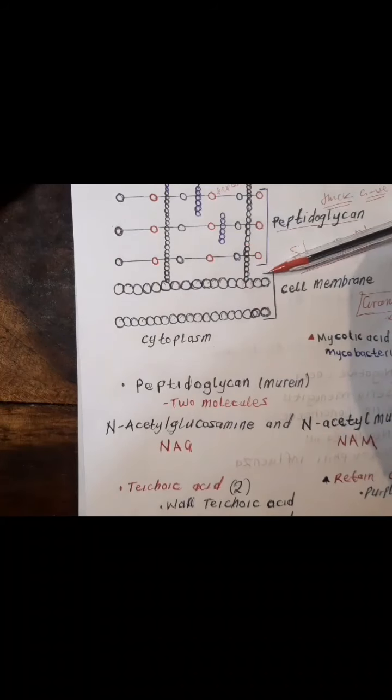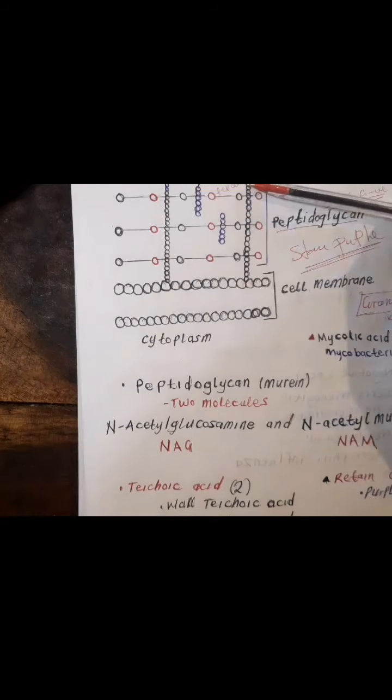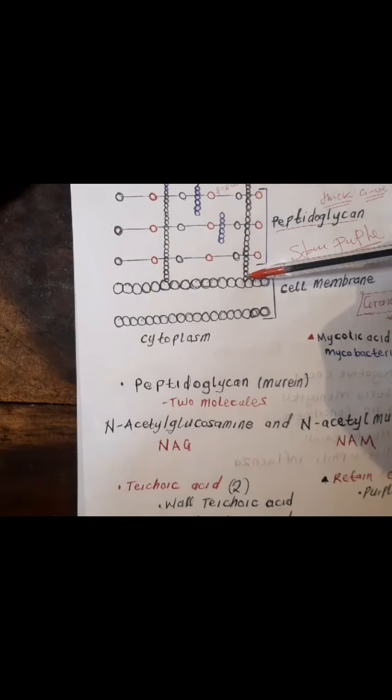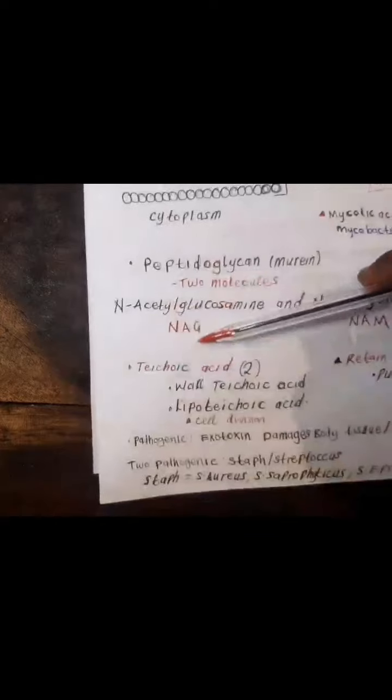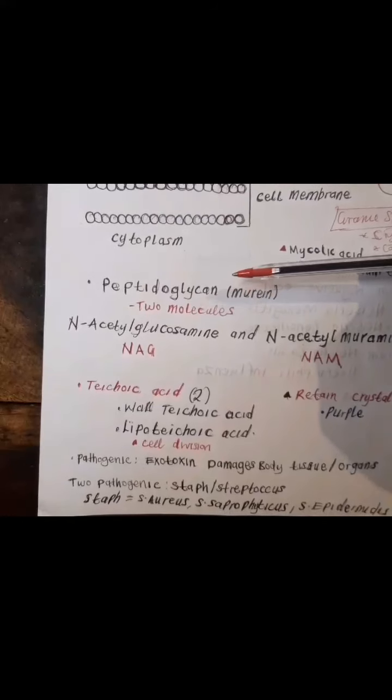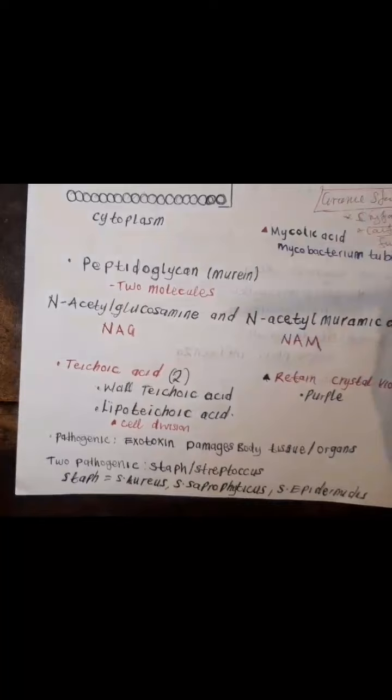The peptidoglycan is made up of teichoic acids. There are two types of teichoic acid: lipoteichoic acid, which is attached to the cell membrane, and wall teichoic acid, which only attaches within the peptidoglycan. The molecules of sugar and amino acid are linked together — N-acetylglucosamine, abbreviated as NAG, and N-acetylmuramic acid, abbreviated as NAM.